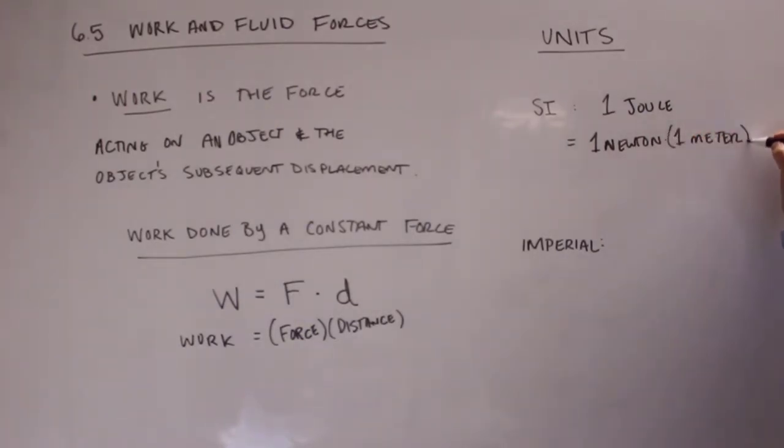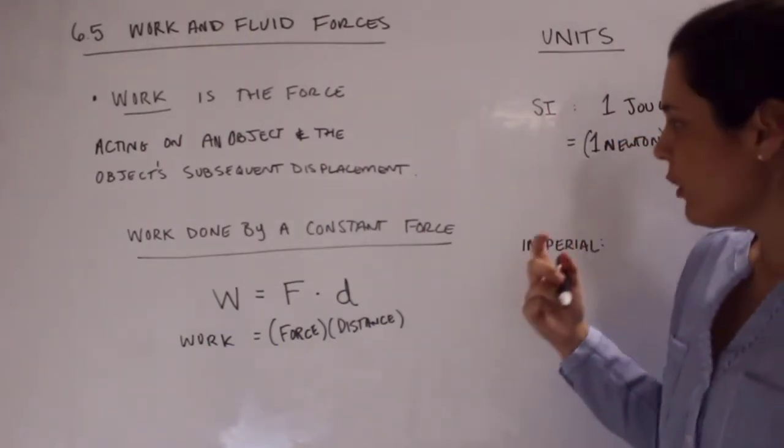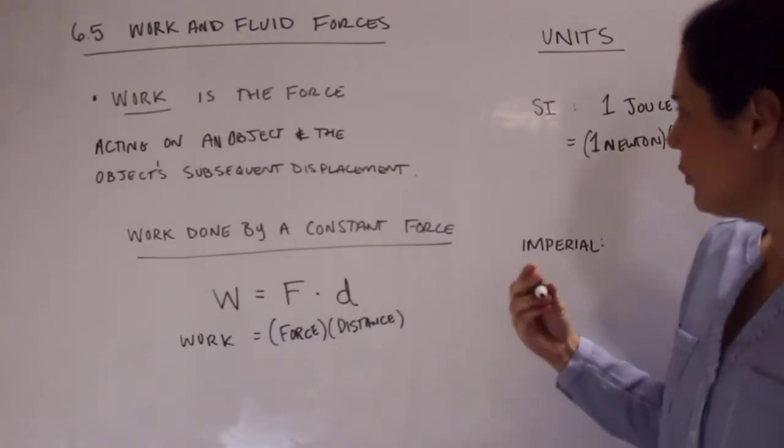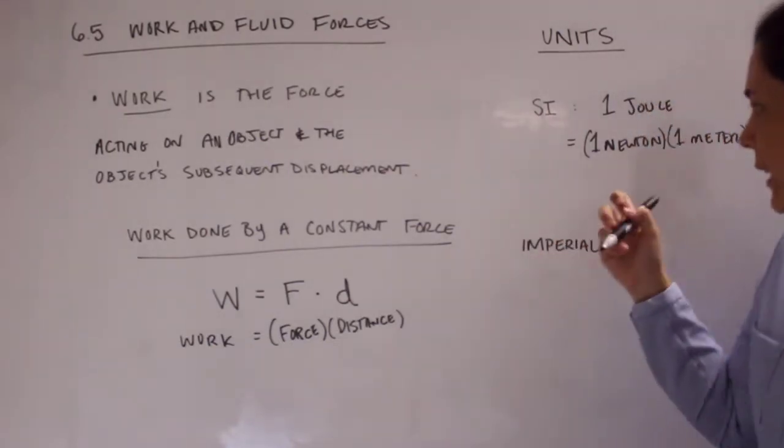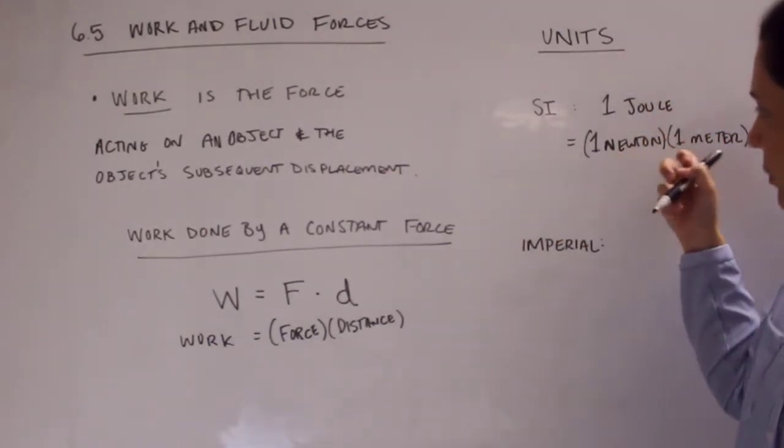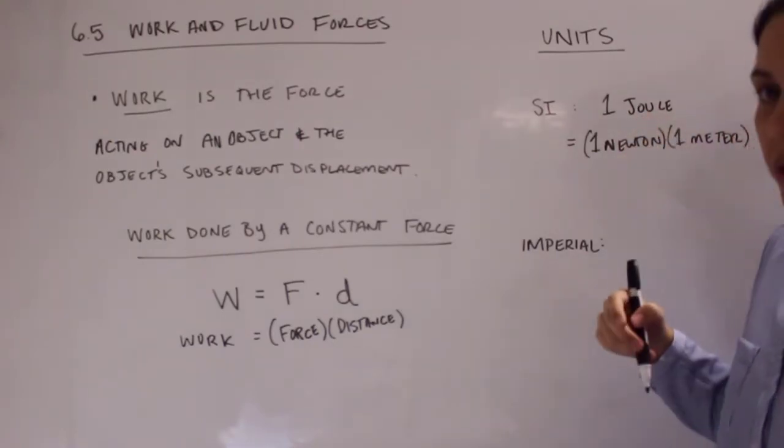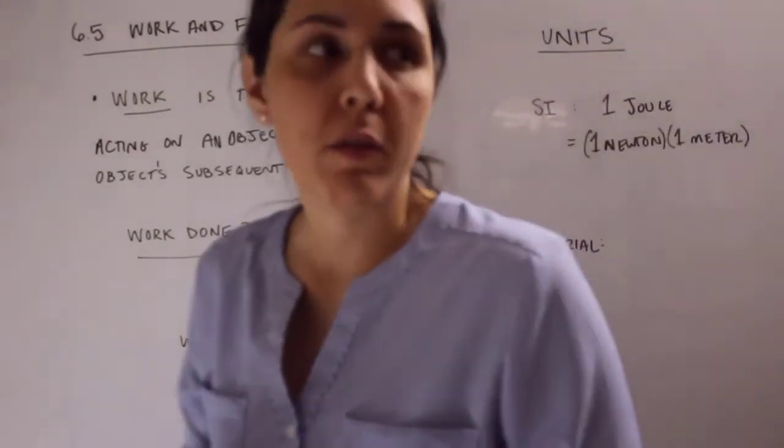And so meter, you're probably familiar with that one. That is a unit of length, so that's the distance that your object would move. And then a newton is a unit of force. And then a newton meter, you can call this a newton meter, is 1 joule. So that's our SI units for work.